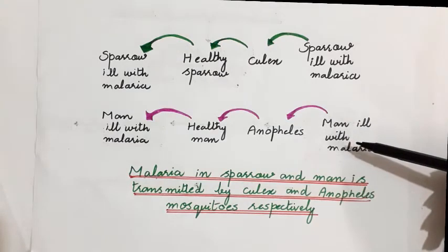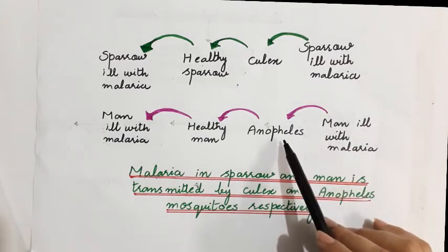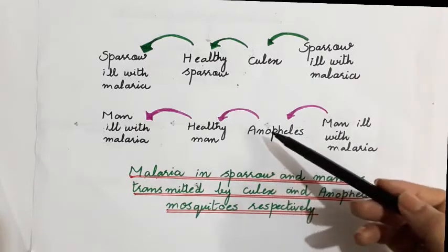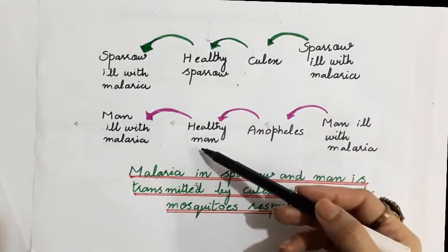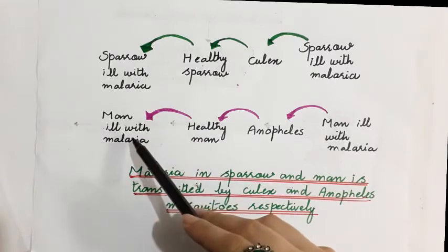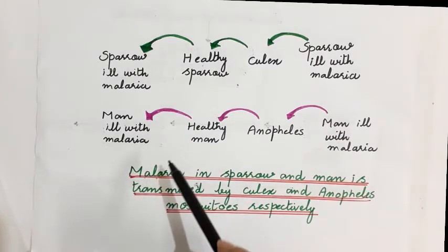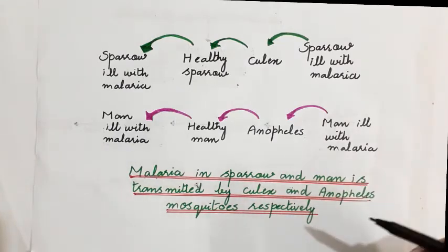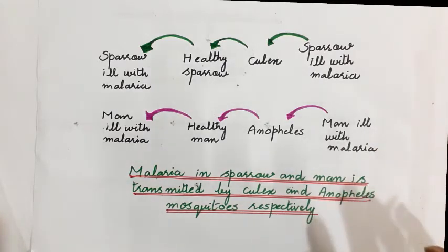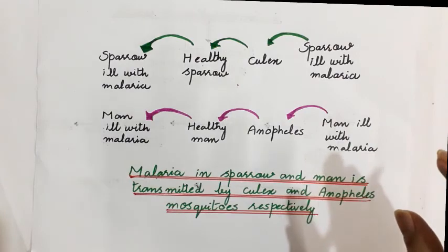The Italian biologist's experiment: a man ill with malaria was bitten by an Anopheles mosquito, which then became infected and carried plasmodium. When that infected Anopheles mosquito bit a healthy man, plasmodium was transmitted and the healthy man became ill with malaria. This is the information regarding the second biological problem discussed today. In today's lecture, we discussed all the biological problems regarding malaria.